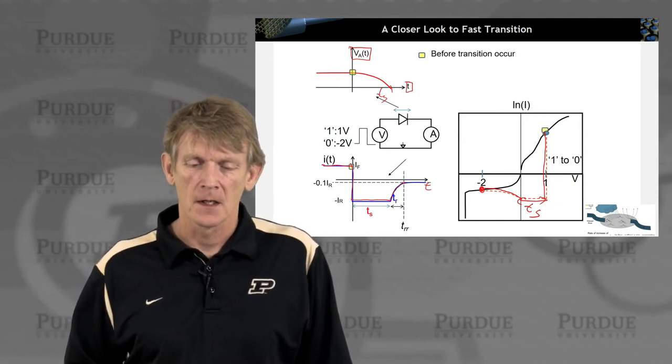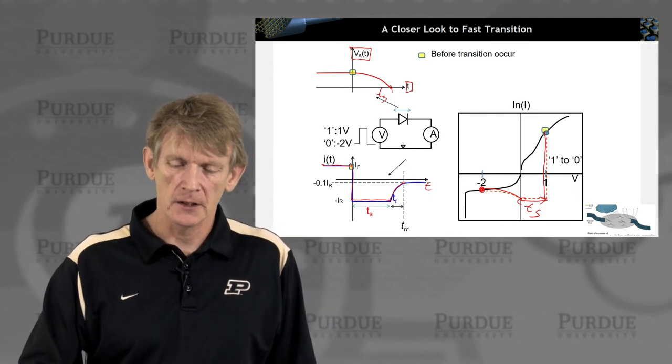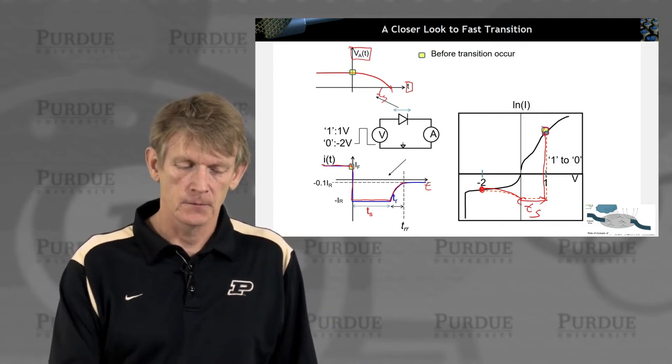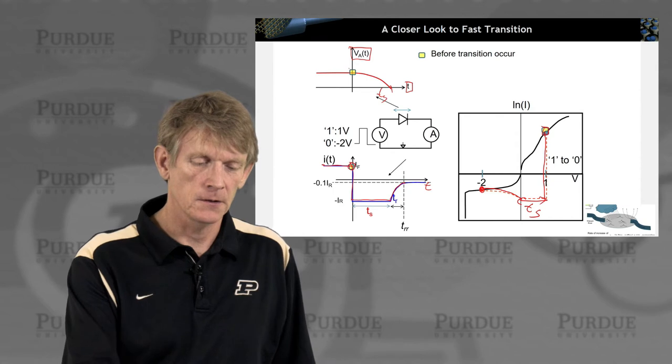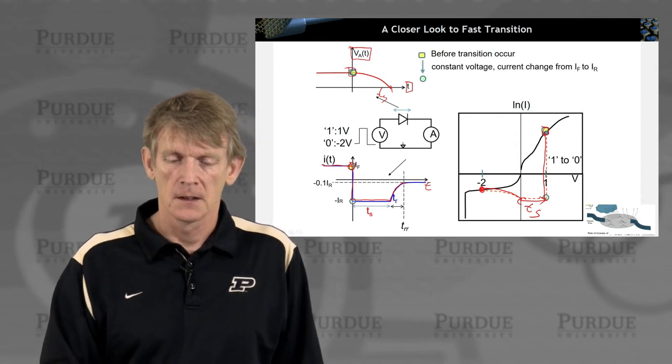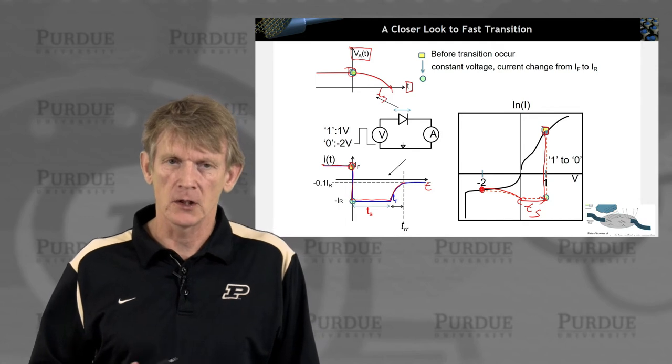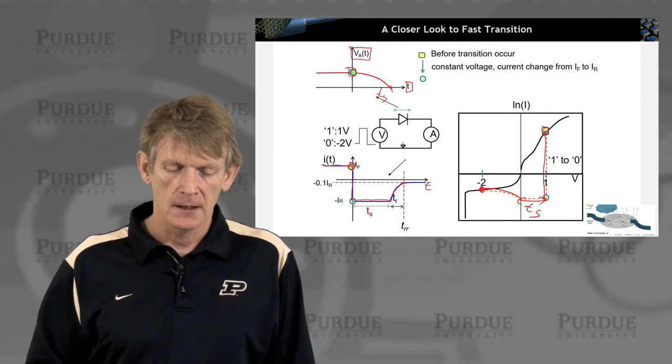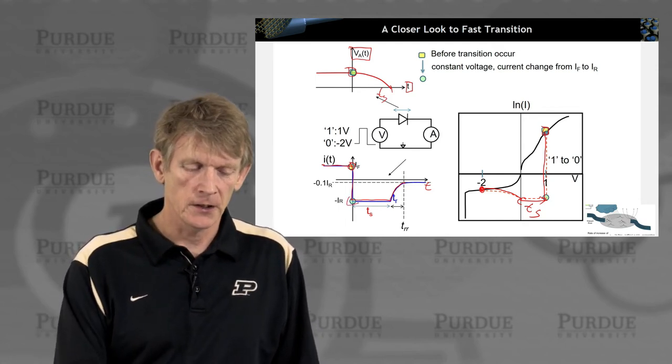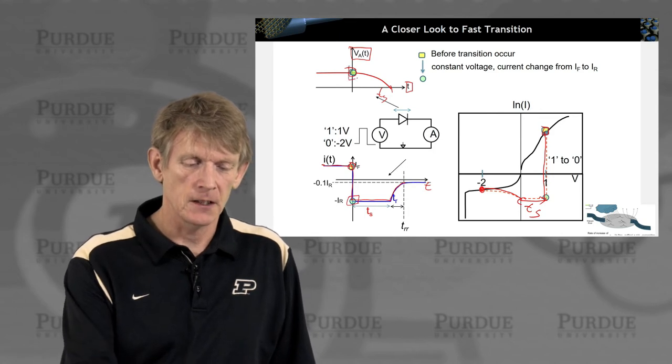So let's step through this again. Before the transition occurs, we are here in the yellow dot, here in the current, and here. Now as we change the overall signal on the diode, the current will switch. We're on the green dot, but the voltage hasn't switched yet.